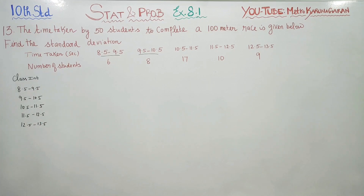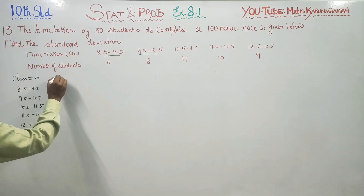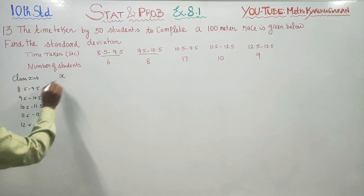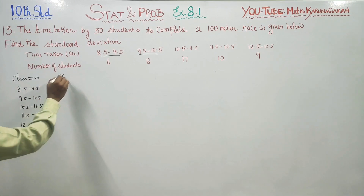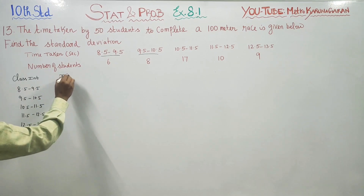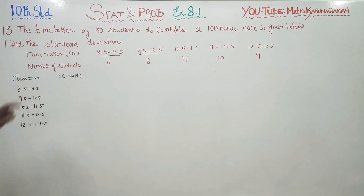To find the standard deviation, you have to take the midpoint. The midpoint of the class interval is called x. We are going to take the midpoint. How to find the midvalue? You have to just add the two class boundaries and divide by 2.